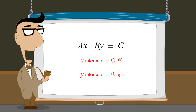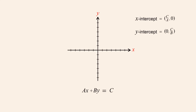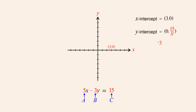We now have expressions for the x and y-intercepts of a line written in standard form. One advantage to using the standard form is that it is especially easy to graph a line since we can quickly determine both its x and y-intercepts. As an example, in the equation 5x minus 3y equals 15, the constants a, b, and c are 5, negative 3, and 15. So the x-intercept has an x-coordinate of c over a, which is 15 divided by 5, or 3. And the y-intercept has a y-coordinate of c over b, which is 15 divided by negative 3, or negative 5. To graph this equation we simply draw a line that passes through both intercepts.